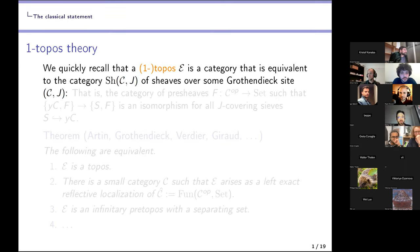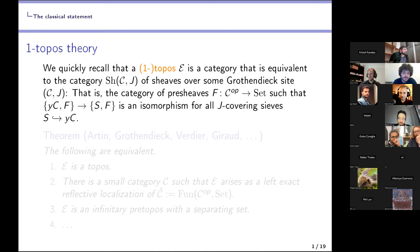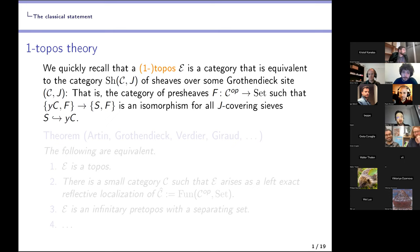To start, let's recall that a topos is by definition a category of sheaves over a small site — that is, a small category together with a Grothendieck topology on it. By definition this is the full subcategory of pre-sheaves from C to Set which take covering sieves to limiting diagrams. The way I wrote it here is just a slick way to write down the sheaf condition.